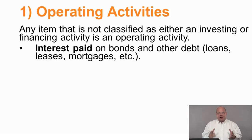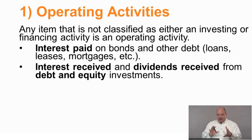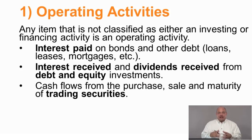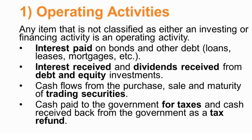Some specific items classified as operating activities: interest paid on bonds and other debt is an operating activity. Interest received and dividends received are operating activities. Cash flows from the purchase, sale, and maturity of trading securities are operating activities. And cash paid to the government for taxes, and any cash received back as a tax refund, is also an operating activity. So: interest paid, interest and dividends received, trading securities, and taxes are all operating activities.